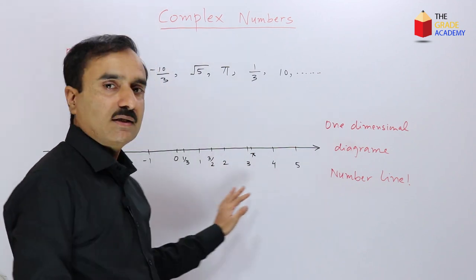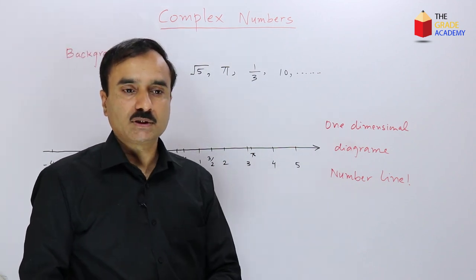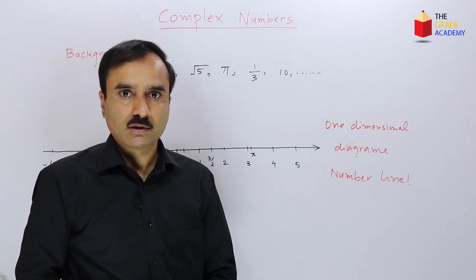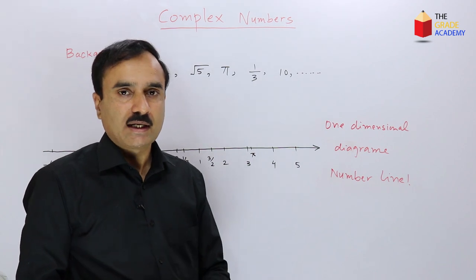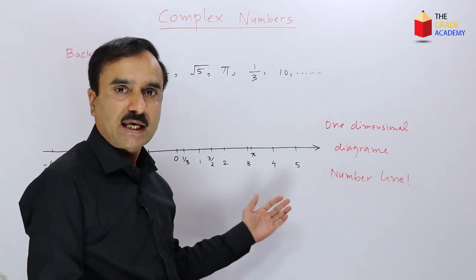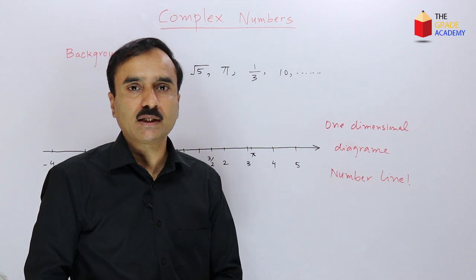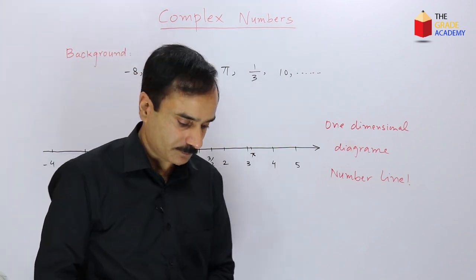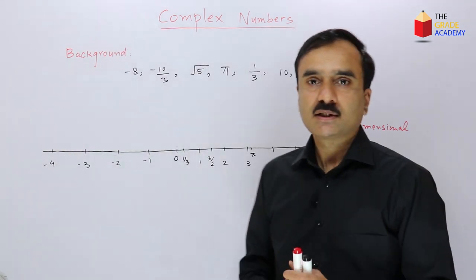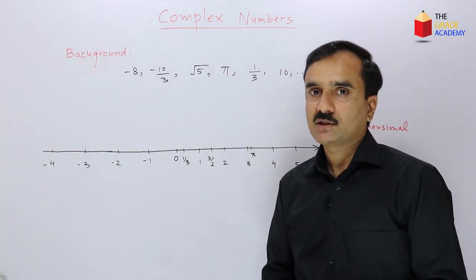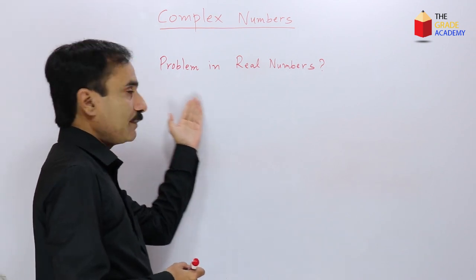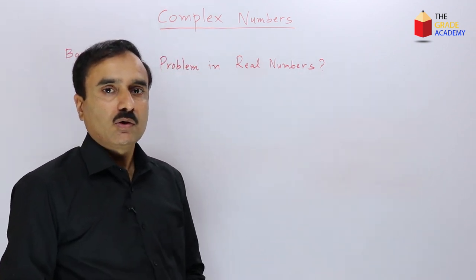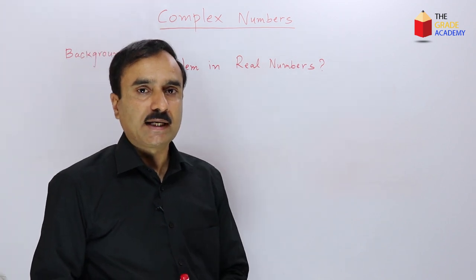But as we saw in the previous sets of numbers, there were some shortcomings and limitations. So the question arises: does the set of real numbers have any limitation or shortcoming? Yes, the set of real numbers does have a limitation — we do not have a real number whose square gives us a negative number.